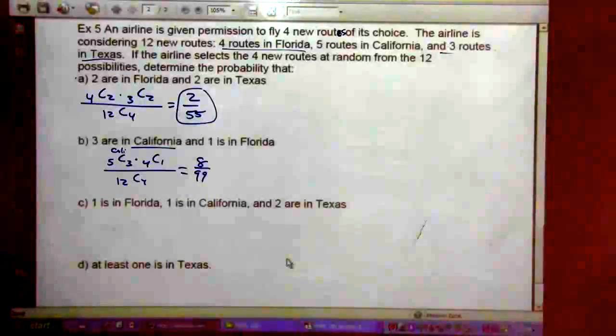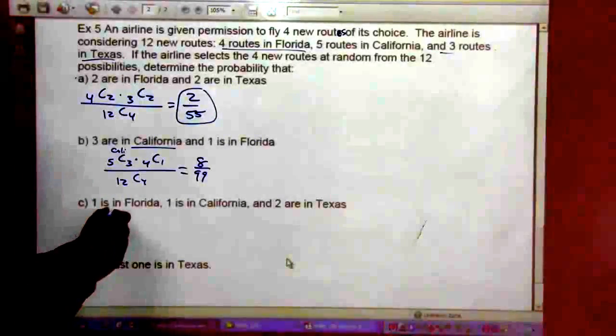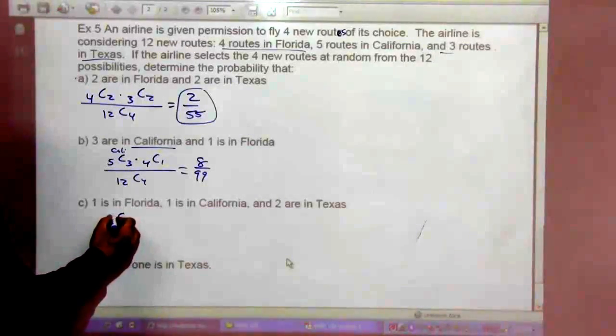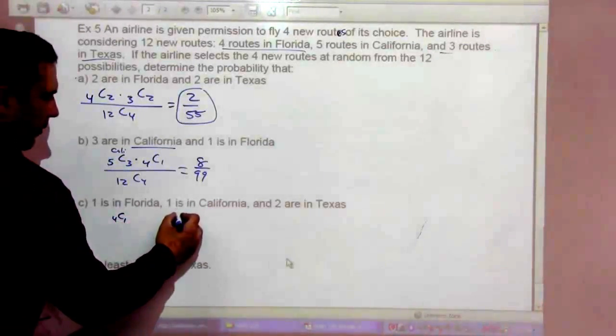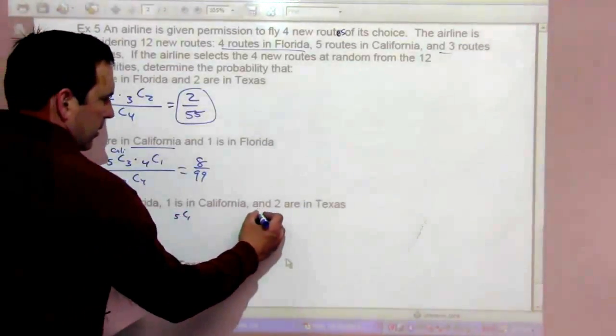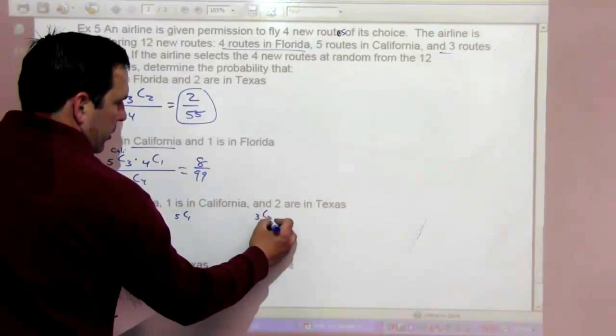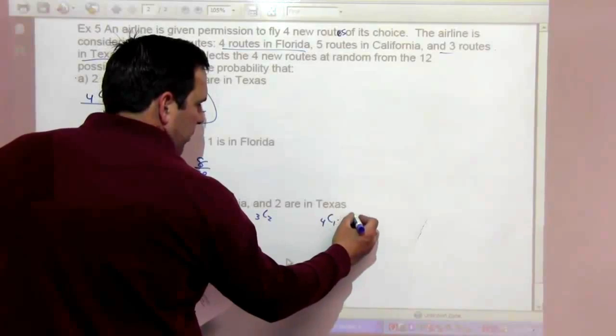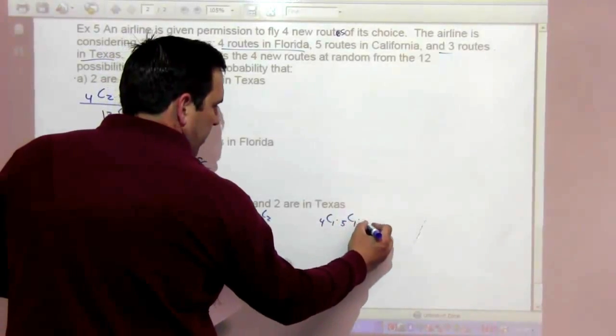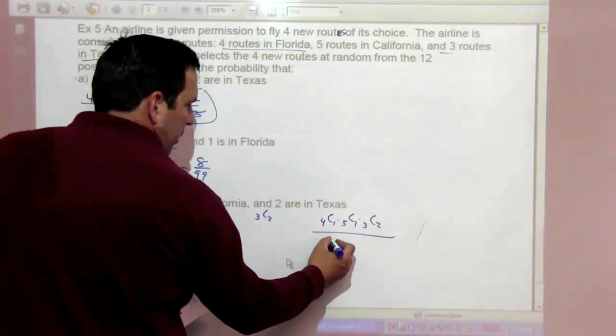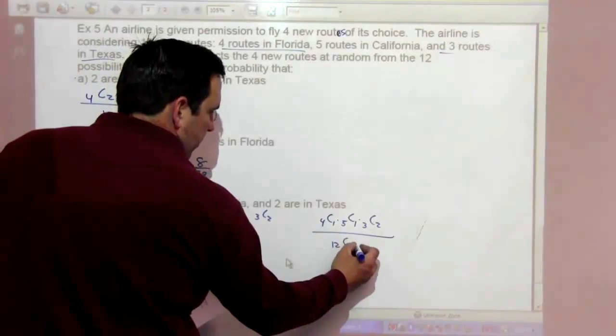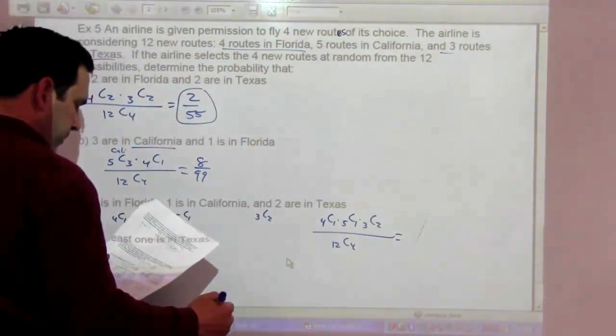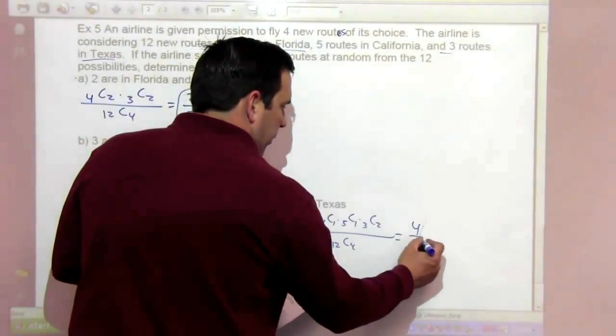Part C says 1 is in Florida, 1 is in California, 2 are in Texas. So for Florida, that's 4 choose 1. California, 5 choose 1. Texas are 3 choose 2. So it's 4 choose 1 times 5 choose 1 times 3 choose 2 over 12 choose 4. And you get 4 over 33.